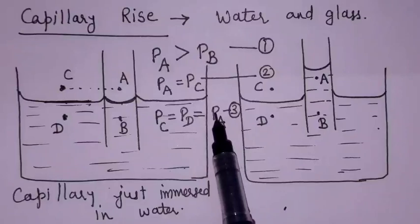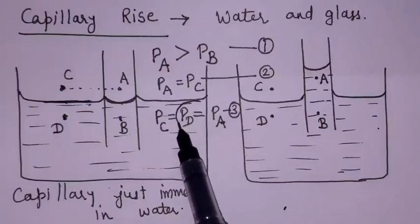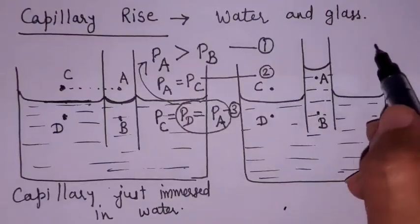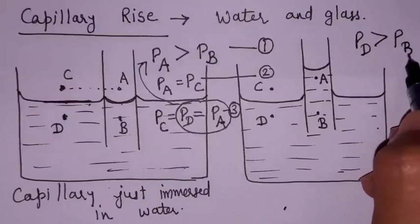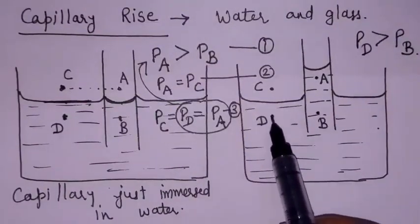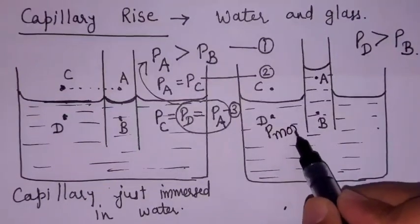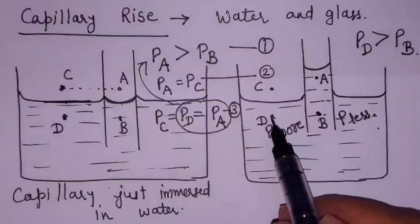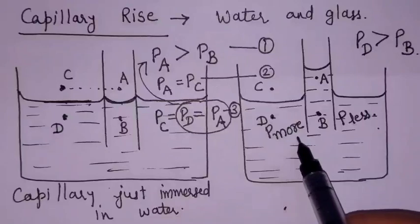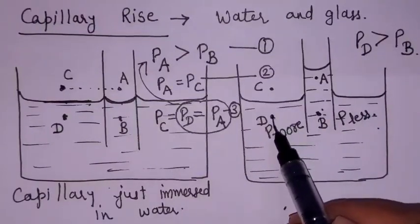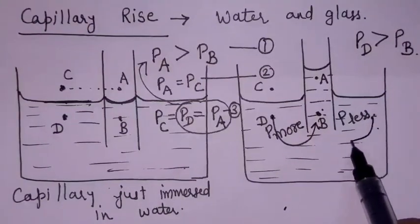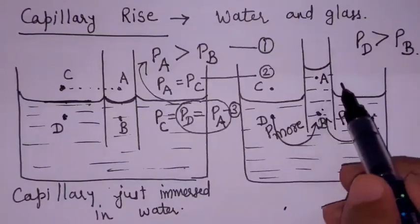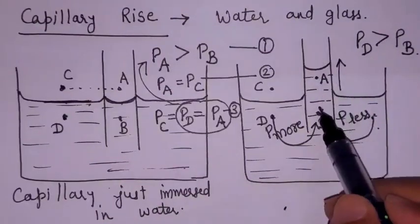Substituting PA equal to PD into equation 1, after equilibrium we get PD is greater than PB. The pressure at D is more and at B is less. So the liquid molecule moves toward less pressure, increasing the liquid level inside the capillary tube — hence there is a rise.